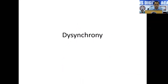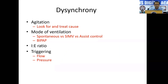Dysynchrony is another issue. Dysynchrony can be because of agitation — the patient is extremely agitated, and you have to look for the cause and treat it. The patient may be anxious, may be having pain, or the mode or tidal volume is not fitting the patient's requirements. Inspiratory and expiratory ratio could have been not optimal — that has to be sorted. Triggering: sometimes somebody must have accidentally set a very high flow or pressure trigger, and that also needs to be looked into.